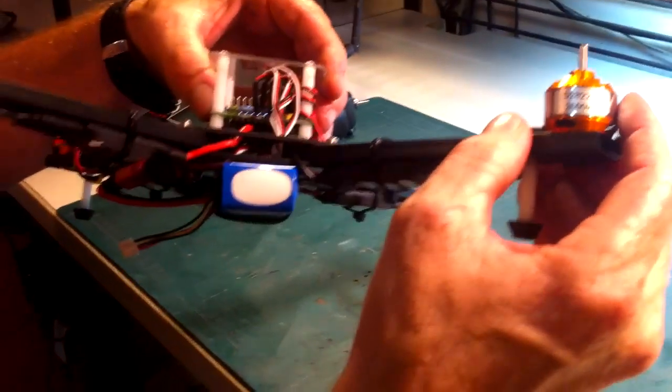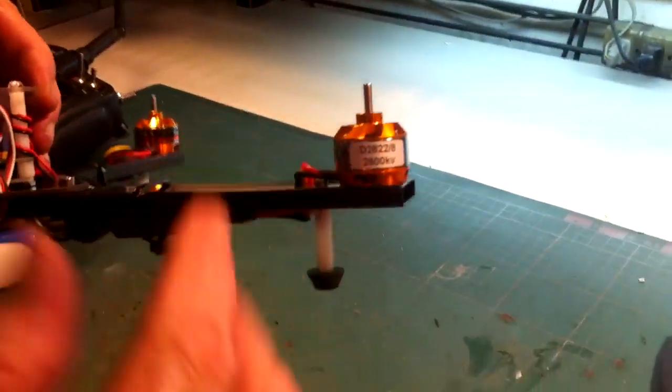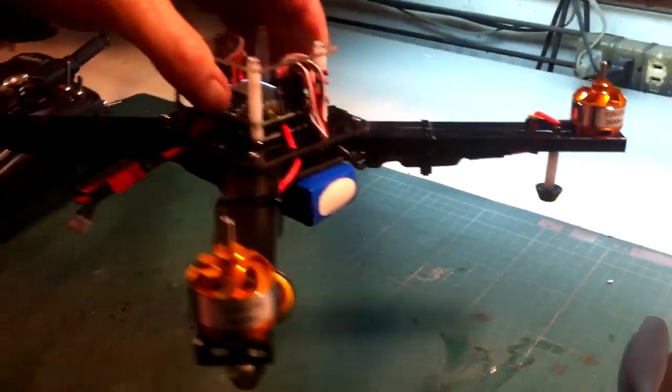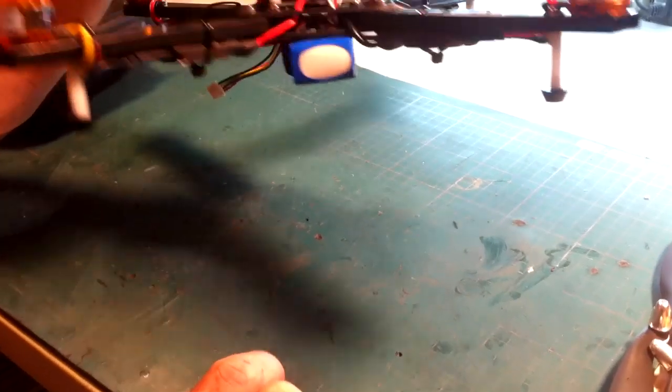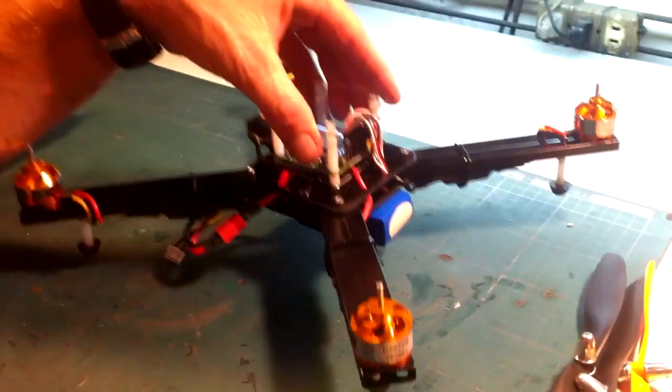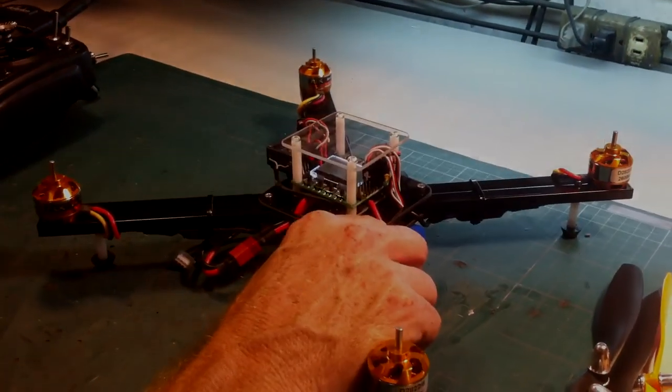Frankly, this is an experiment. These motors spin insanely fast, 2600 kV each motor. This quadcopter weighs about 700 grams with the battery, but the motors have 850 grams of thrust. I am not even sure if this is going to fly or not, it's a test. But we'll have a look, this is what I'll show you in the next video. All right, stay tuned.